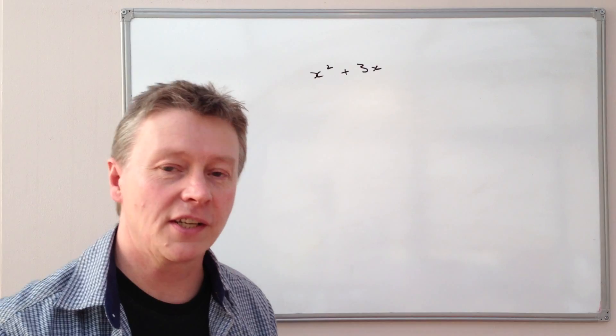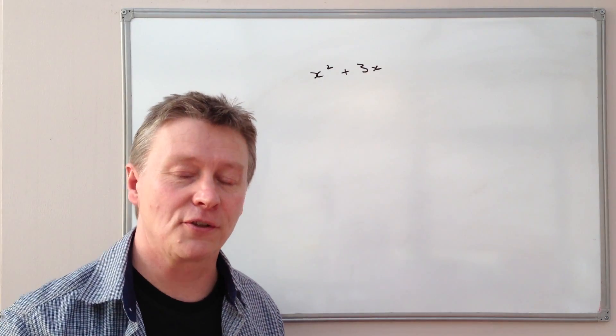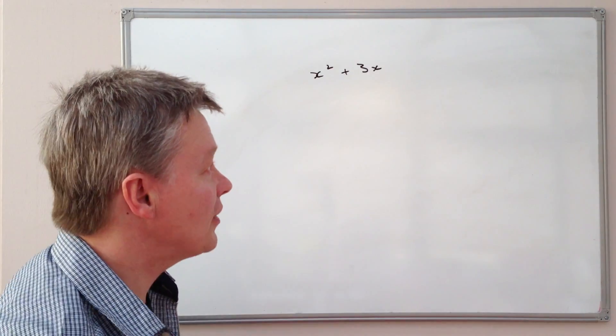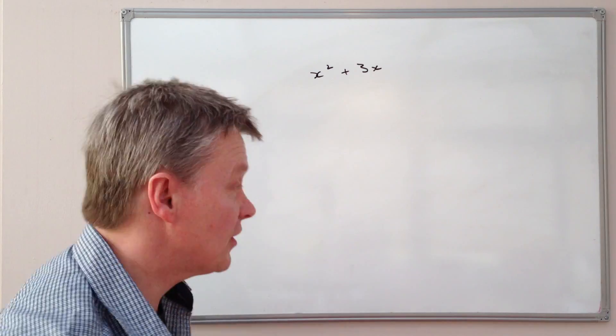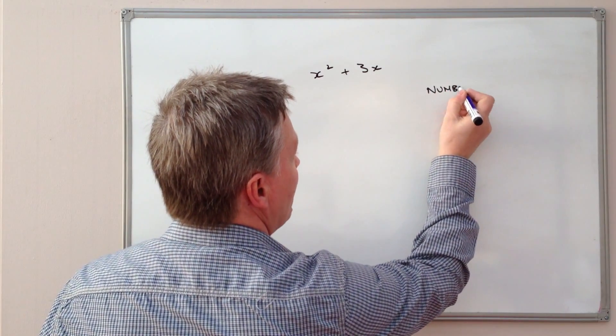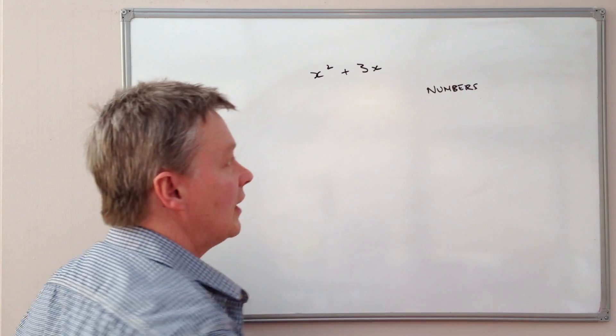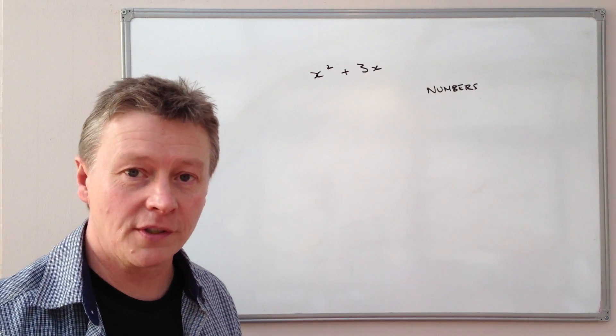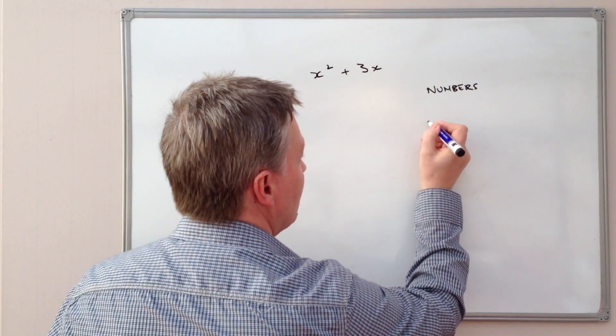And the way to do it really is to look at two different factors or two different areas. So the first thing that you would look at is going to be numbers. And then the second thing that you want to look at is going to be letters.